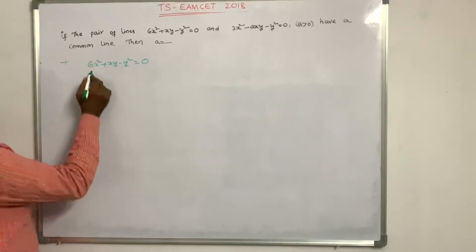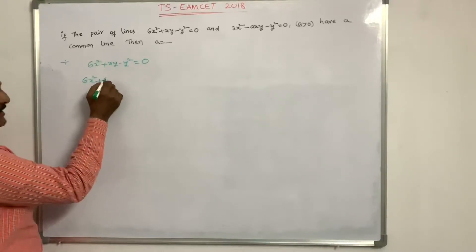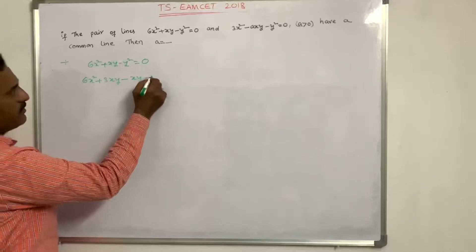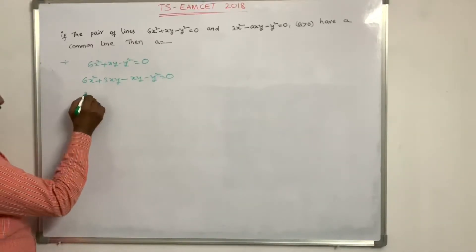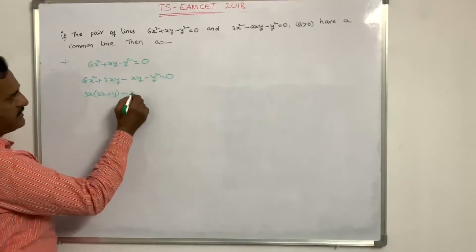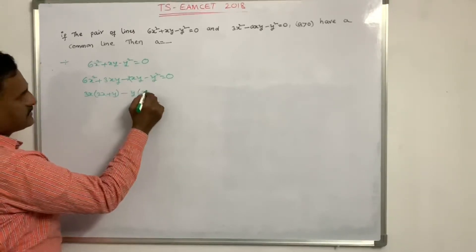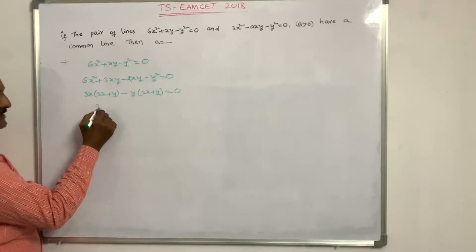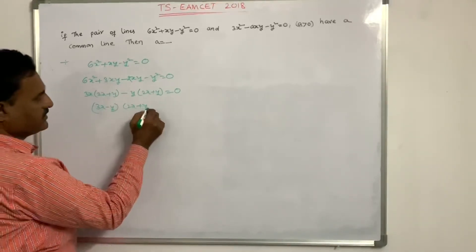Factorizing 6x²+xy−y²=0: using factorization 6×1=6, split as 3×2. So 6x²+3xy−2xy−y²=0. Taking 3x common: 3x(2x+y) − y(2x+y) = 0, giving (3x−y)(2x+y)=0.